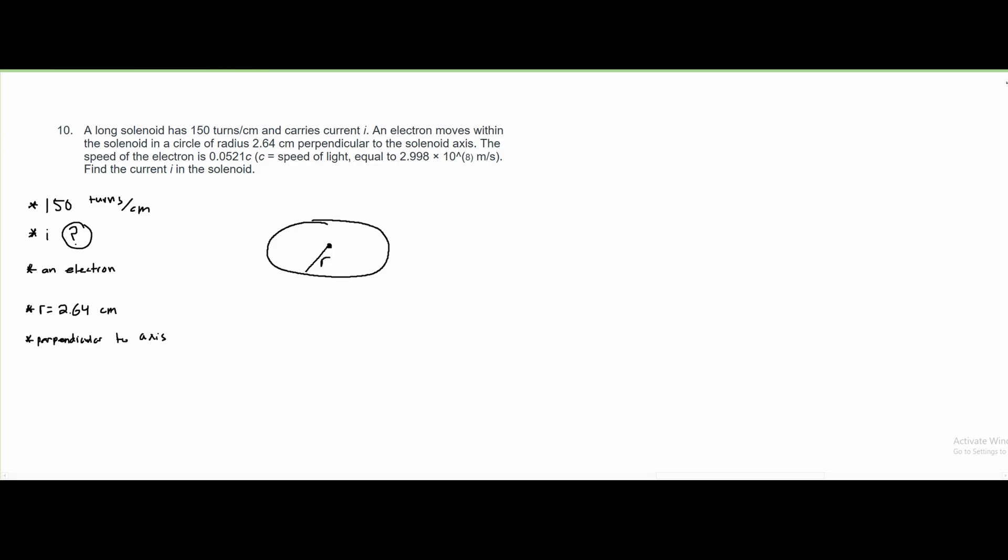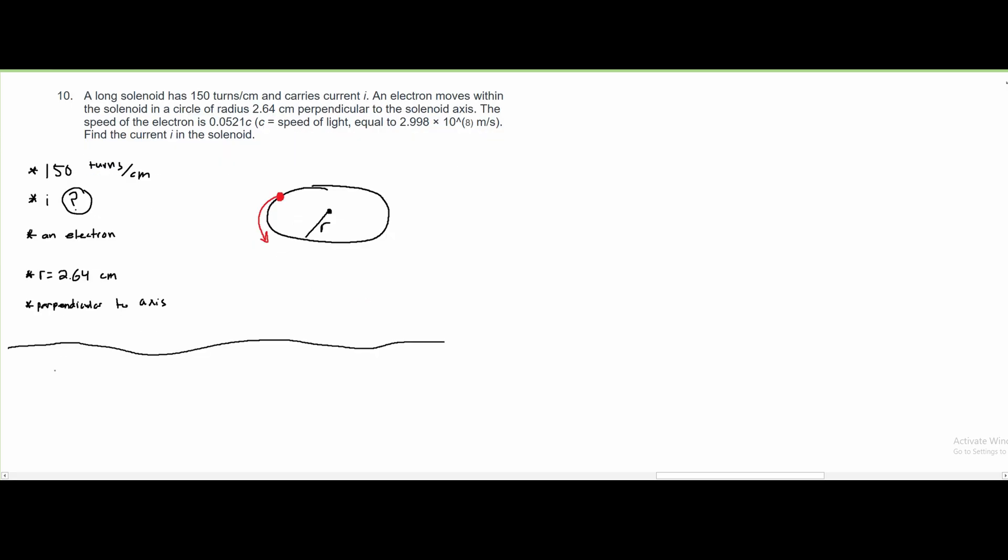Our electron is going around the outside, so we could have this as our electron, and it is going around this way. We need to find the current, and to find the current, we are going to use the magnetic field formula. That's going to be B equals U0 times N times the current I. This is the formula for the magnetic field on a solenoid, so we can say that this is B subscript S.